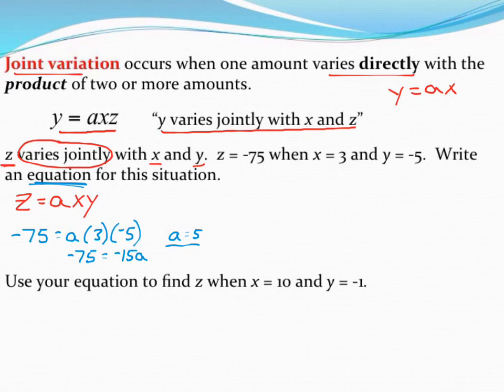So go back and rewrite your equation, just replacing a with what we found it out to be. So z is equal to 5 times x times y. So there's going to be our equation for this varies jointly problem.